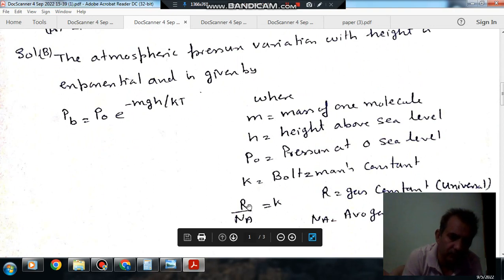And that Boltzmann constant is equal to R by Na, where R is the universal gas constant and Na is Avogadro's number.